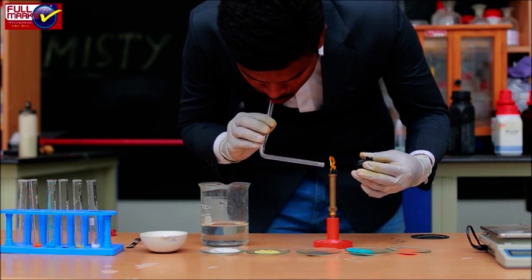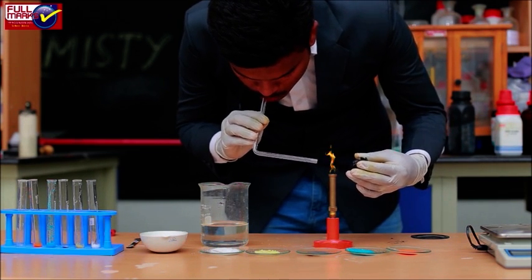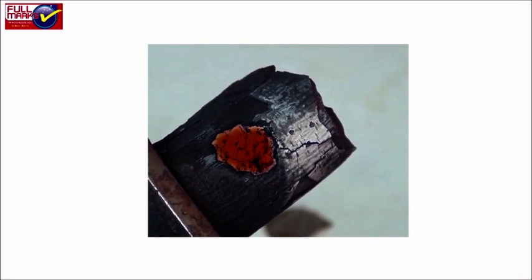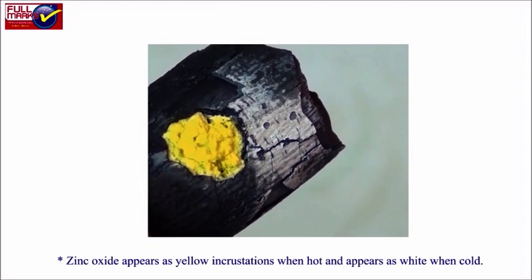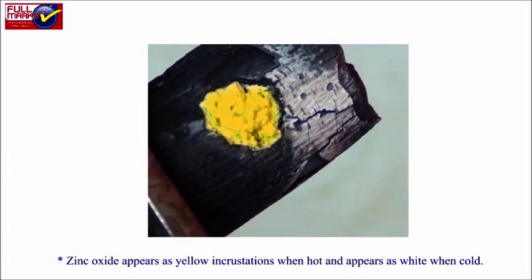On heating, zinc carbonate decomposes into zinc oxide and carbon dioxide. Zinc oxide appears as yellow incrustation when hot and appears white when cold.